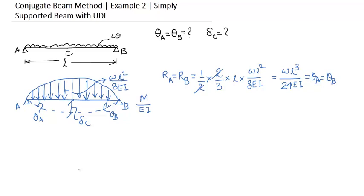Now we have to determine the maximum deflection at the midpoint. According to the theory, the bending moment at any section of the conjugate beam represents the deflection at that section of the real beam. So let us find out the bending moment of this beam at this section.